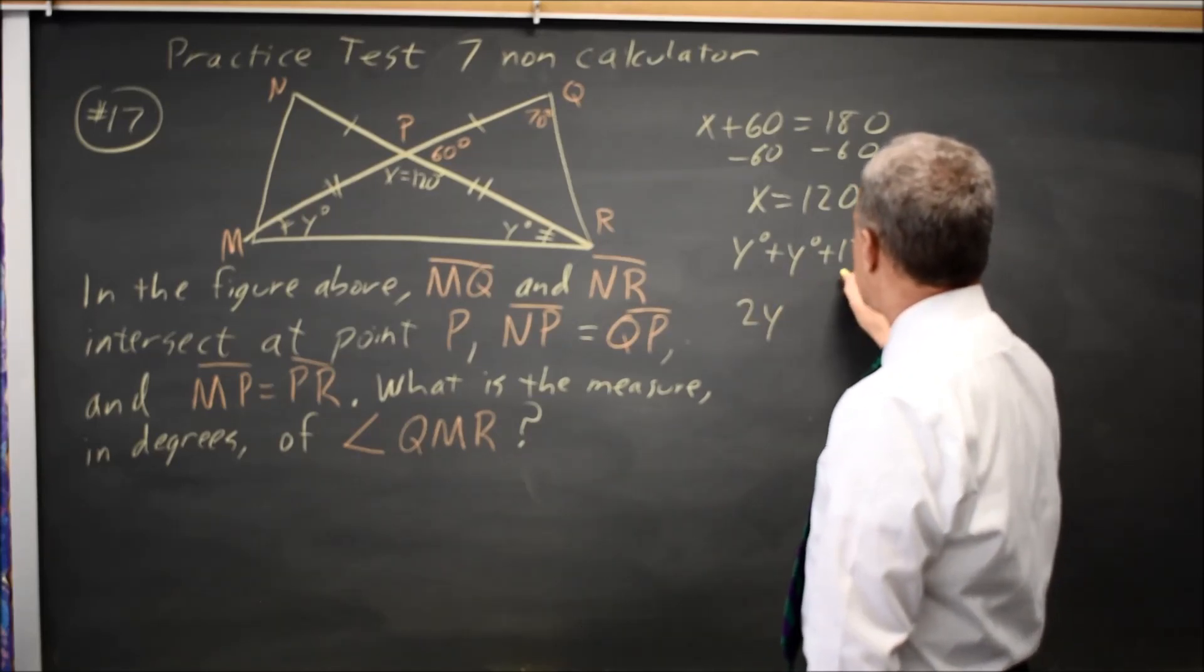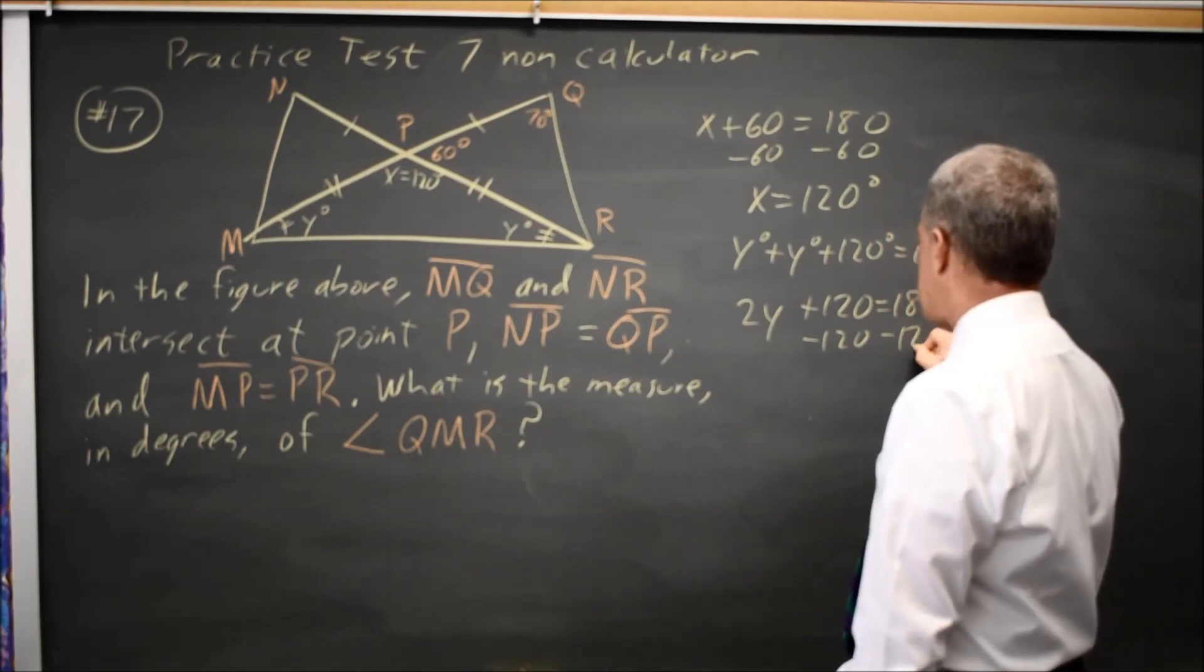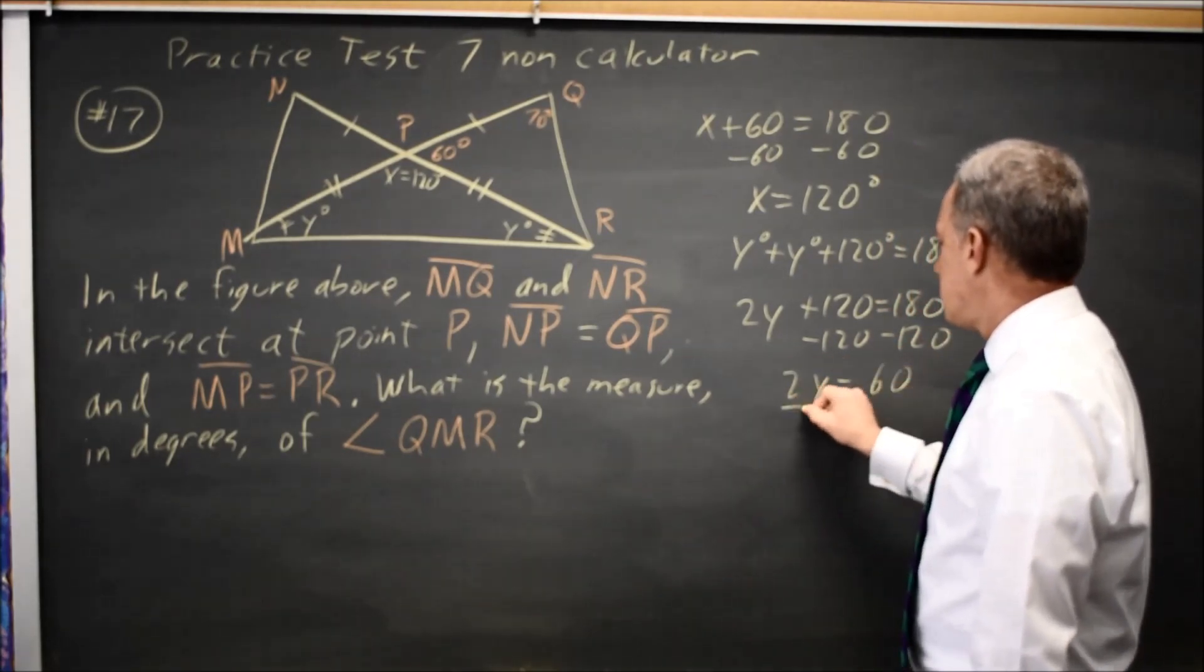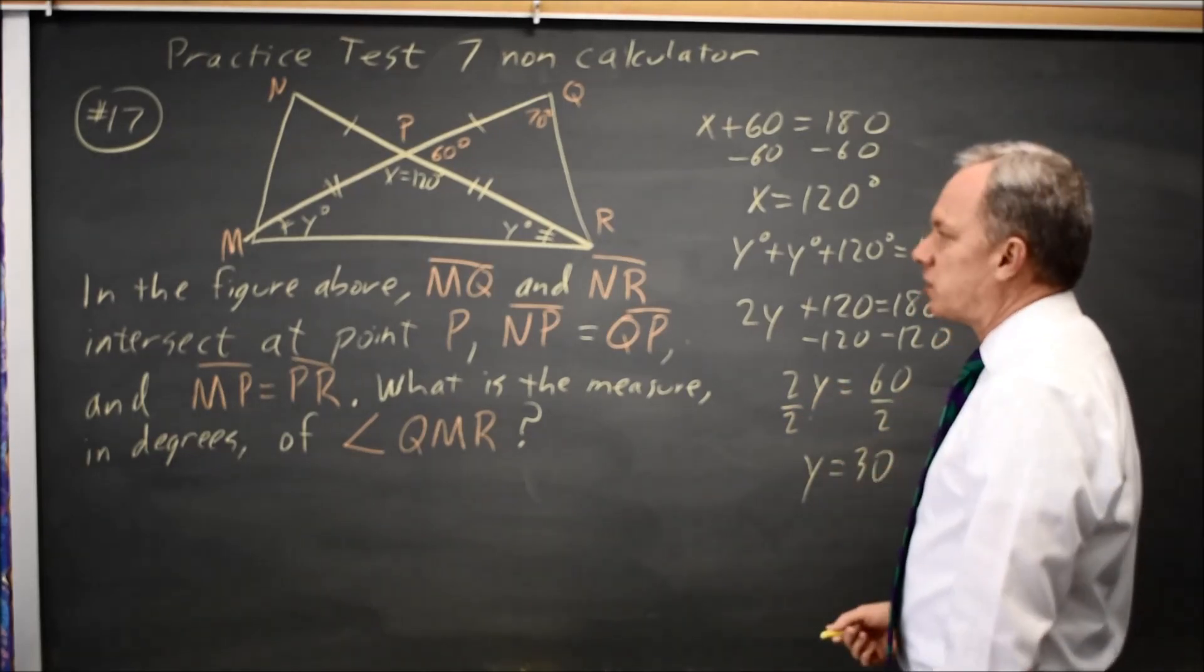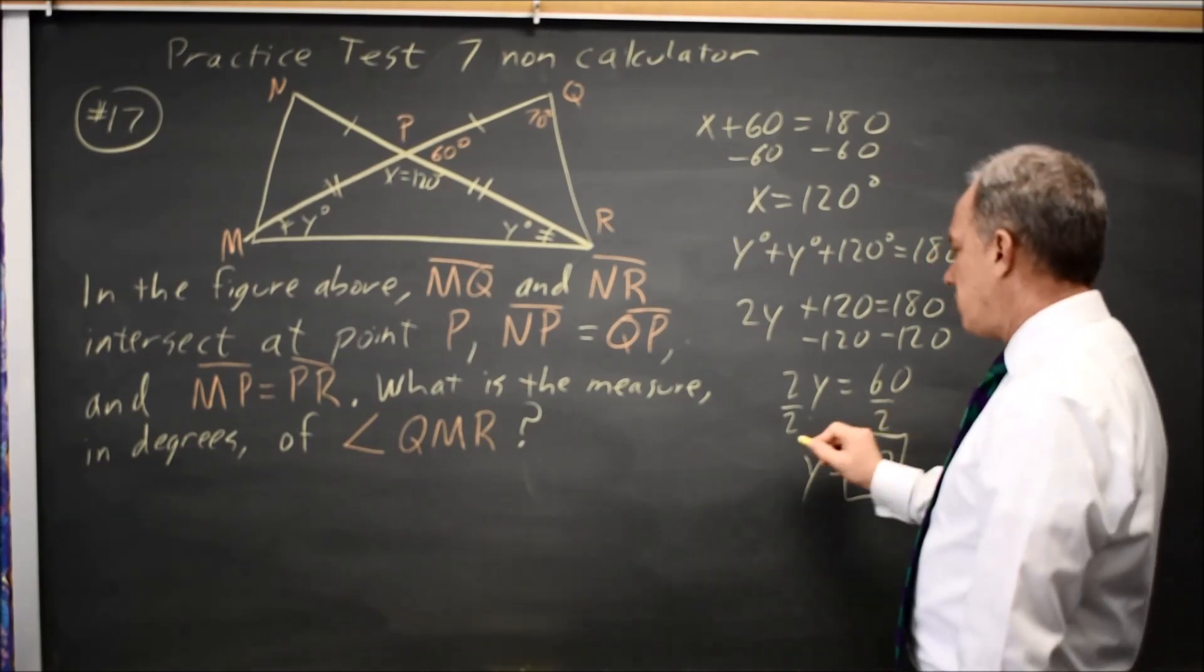2Y plus 120 equals 180. Subtract 120 from both sides. And I get 2Y equals 60, divided by 2, and Y equals 30. Angle Y is 30 degrees. The value of Y is 30.